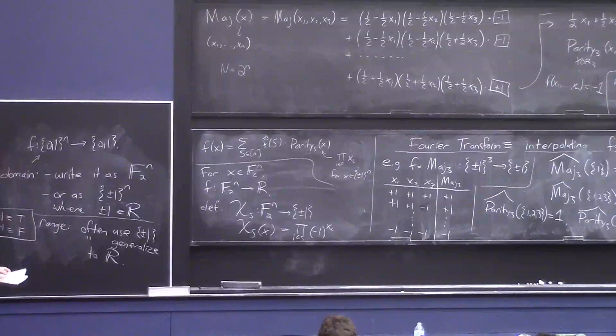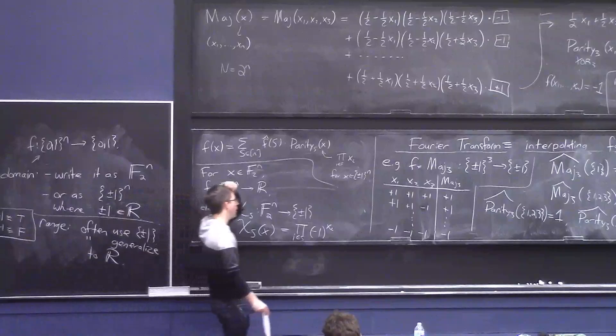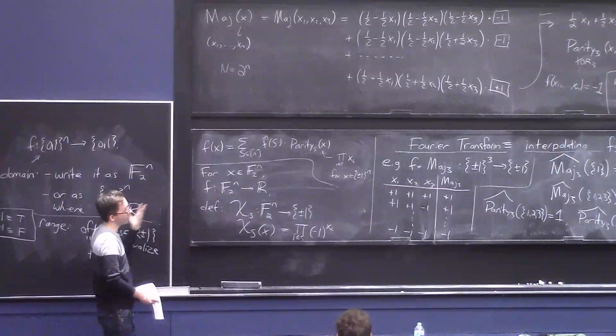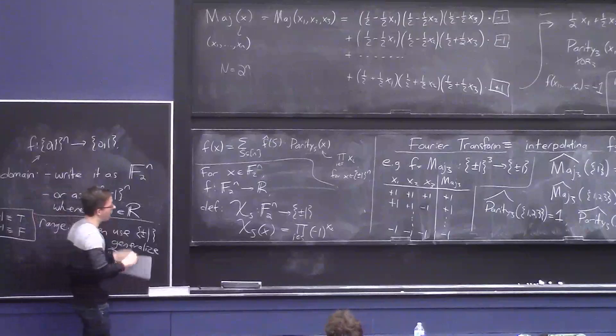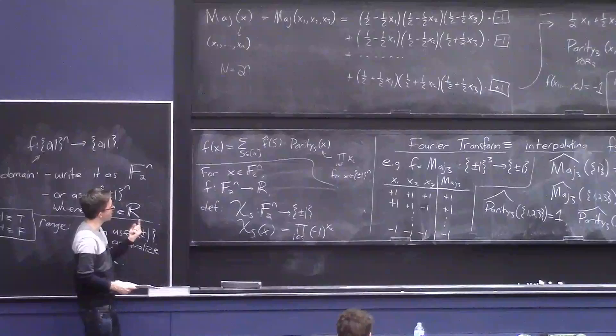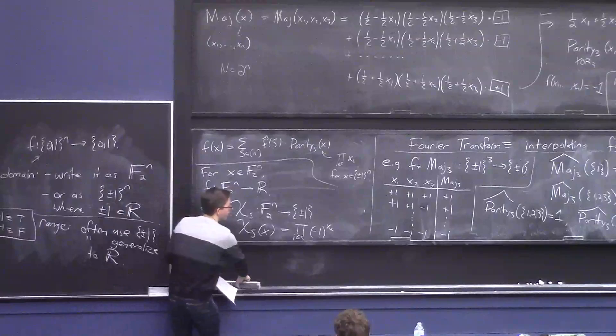Once you think about how to go from the values of a function to the coefficients of its Fourier expansion — or vice versa — it bears a very strong analogy to what we did with the discrete Fourier transform. In fact, in the case where little n is 1, it's exactly the same thing as the discrete Fourier transform, because minus 1 is the 2nd root of unity.